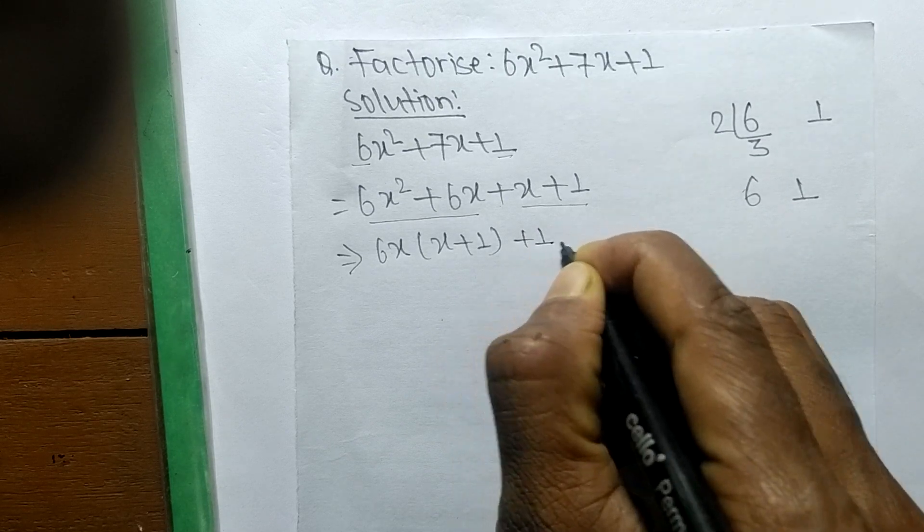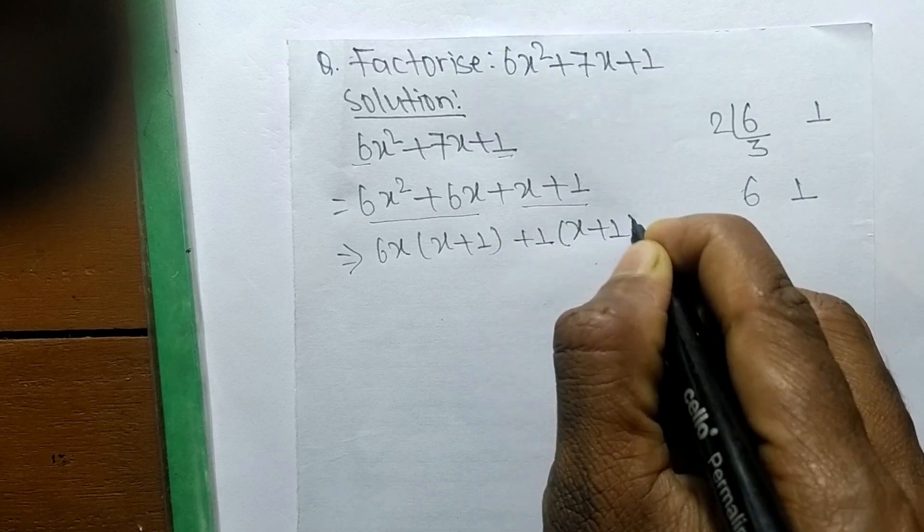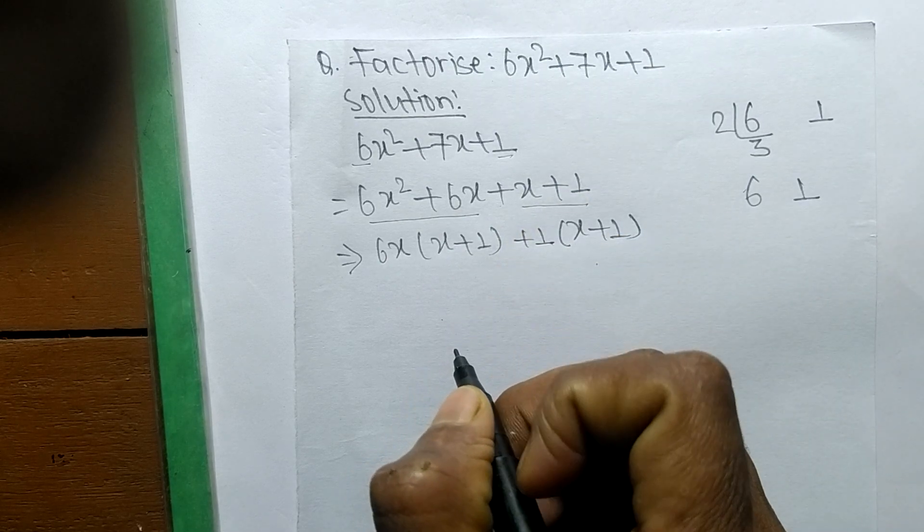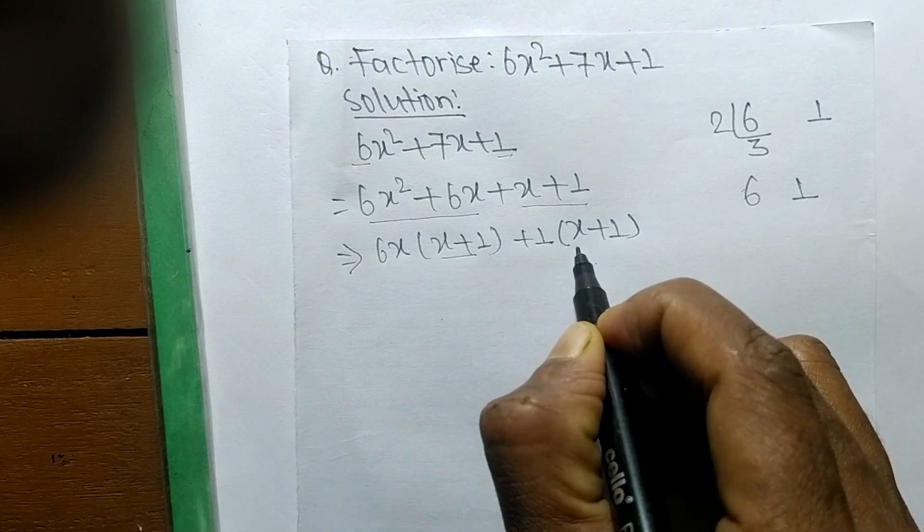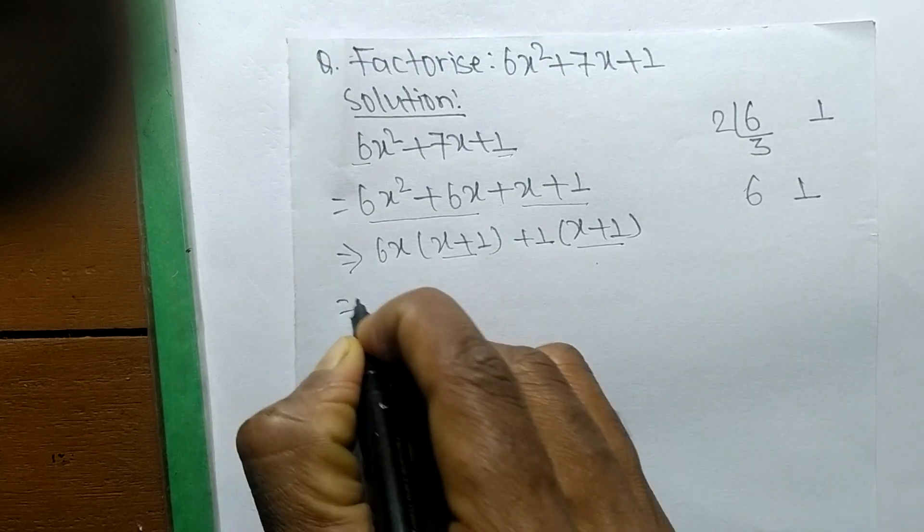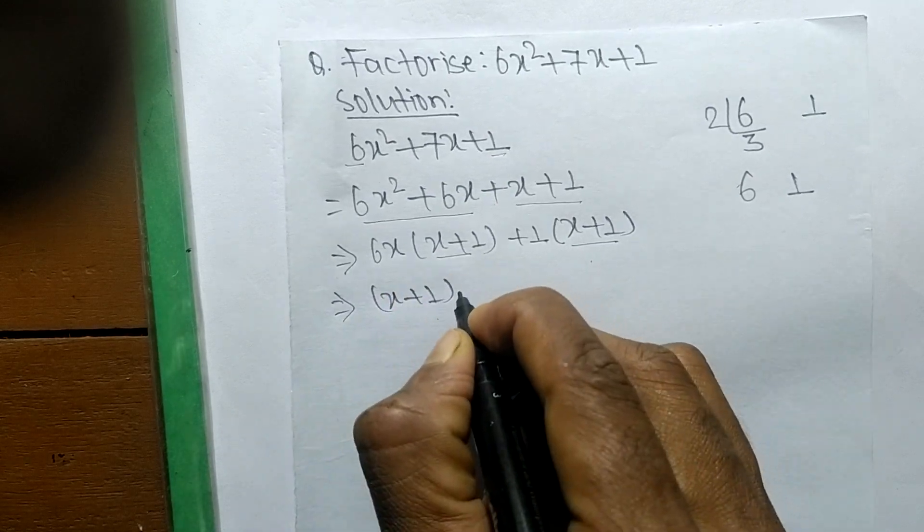So when we take 1, the remaining here is x + 1. So as you look closely, here is x + 1 and here is also x + 1. So x + 1 is common.